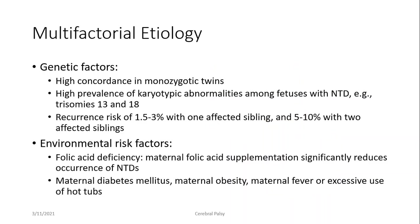The etiology of neural tube defects is multifactorial. Genetic factors play a major role, and it is believed that certain environmental risk factors coupled with genetic predisposition lead to these defects. The major environmental risk factors include folic acid deficiency — maternal folic acid supplementation significantly reduces the occurrence of neural tube defects — in addition to maternal diabetes, obesity, and maternal fever, or even an increase in ambient temperature such as excessive use of hot tubs or jacuzzis. These were found in epidemiological studies to be strongly associated with the presence of neural tube defects.